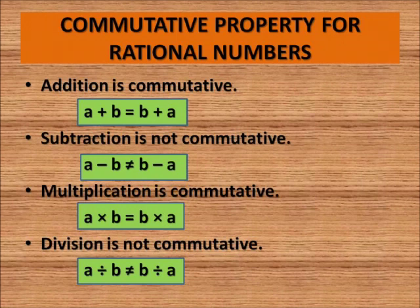Similarly, when it comes to multiplication, a multiplied by b is equals to b multiplied by a, so commutative property holds good for multiplication. Now what about division? In division, again it does not hold good — that is, a divided by b is not equals to b divided by a. We will take examples of rational numbers to prove why addition and multiplication are commutative and why subtraction and division are not commutative.